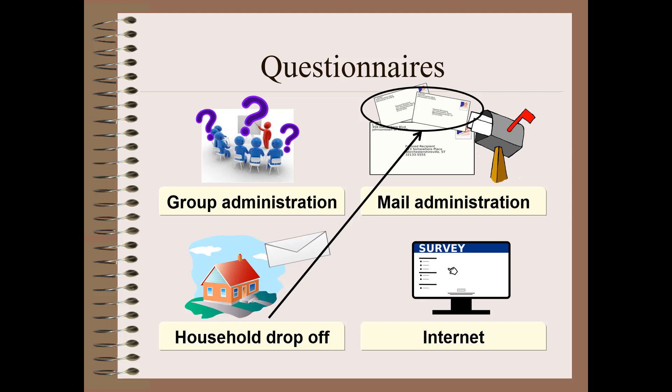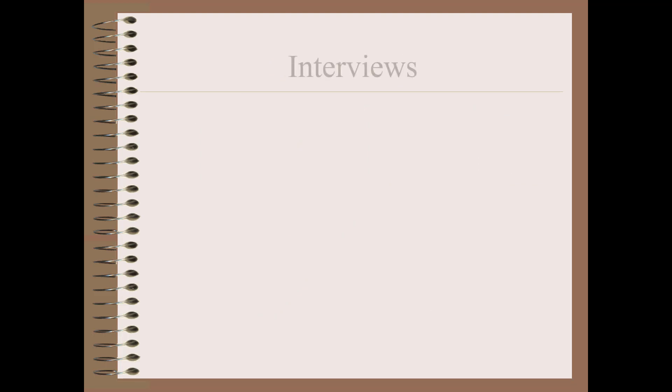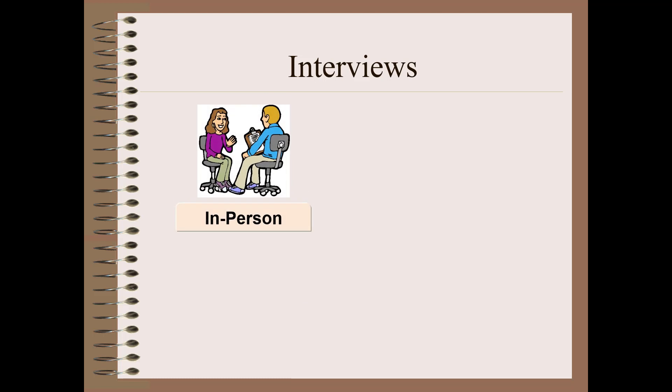The second main type of survey involves interviews, and that can be in-person. This is something we talked about before. The interview can take place in the researcher's lab, it can take place in the participant's home, and it can take place at a public location. Any of those places can work depending on the research questions and what all is involved in the study.